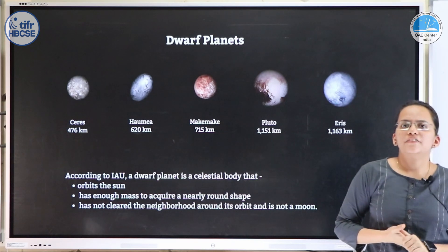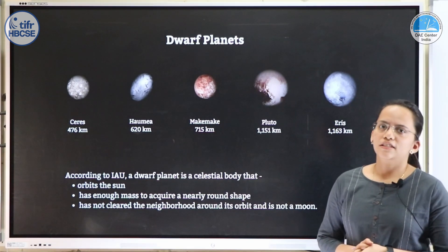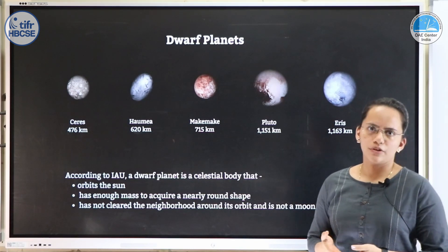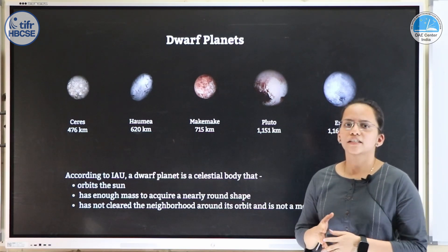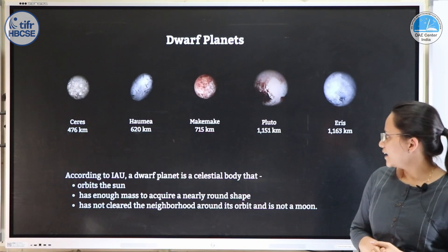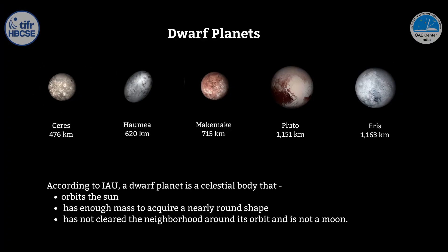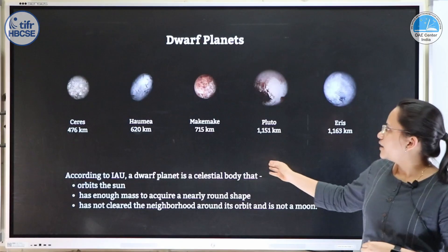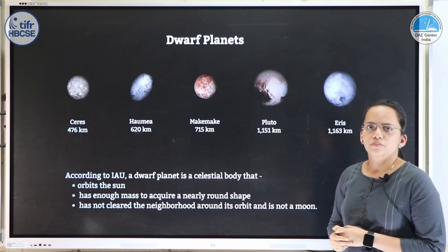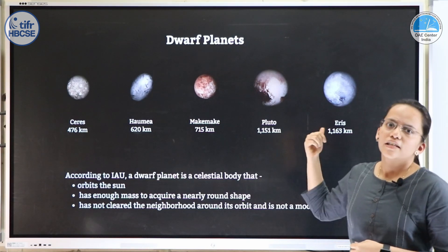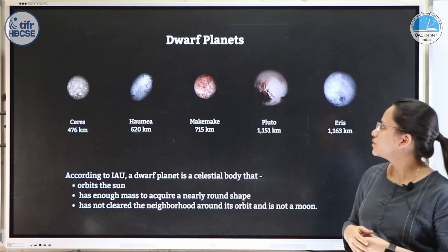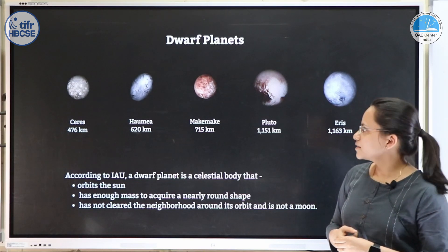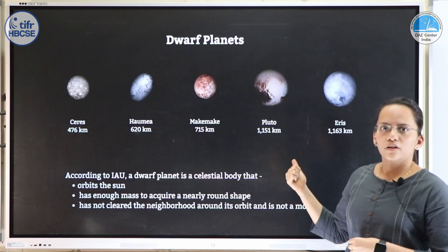After planets we have an interesting category: dwarf planets. According to the IAU, a dwarf planet is a celestial body that orbits around the sun, has enough mass for a nearly round shape, but has not cleared its neighbourhood and is not a moon. Examples include Ceres in the asteroid belt and Pluto in the Kuiper belt. The diameter of Pluto is about 1,000 km — approximately the distance between Mumbai and Delhi. Notably, even the largest dwarf planet is smaller than our moon.